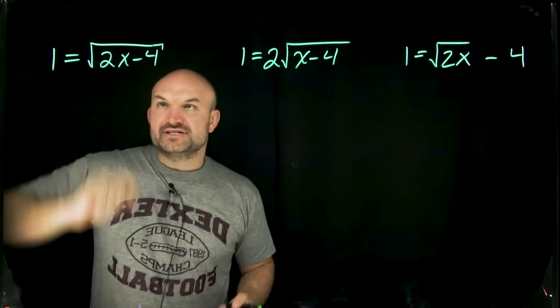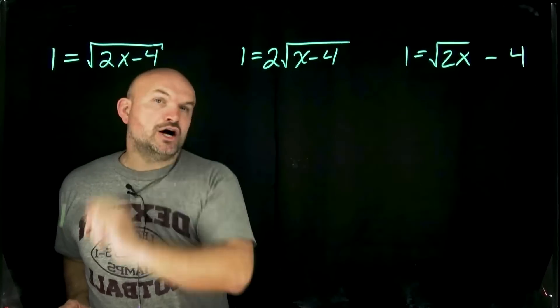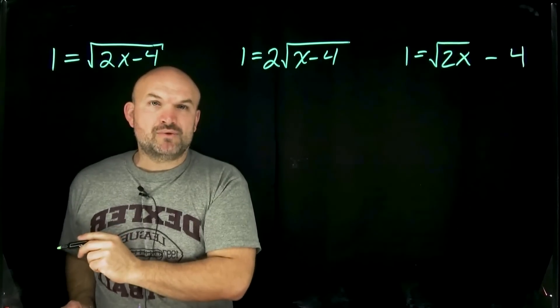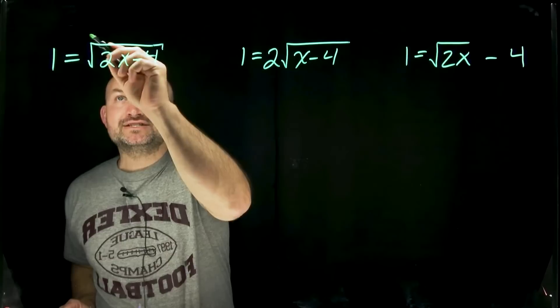Now on the first example when we're using our inverse operations you can't do anything under the radical until that radical is gone. So how do we undo taking the square root? Well in that case what we're going to do is square.